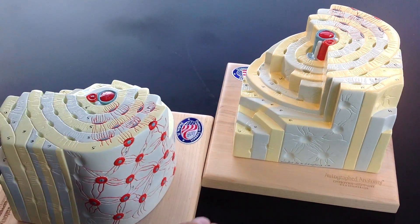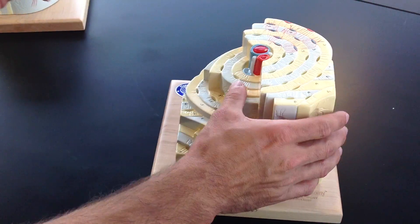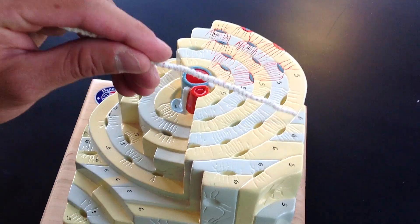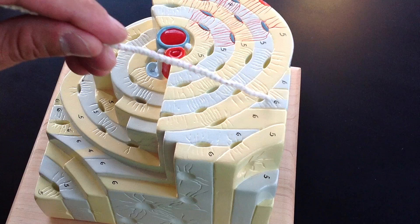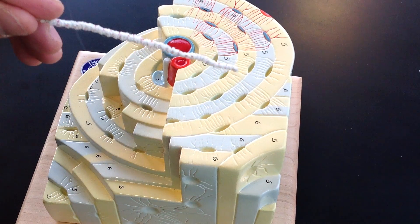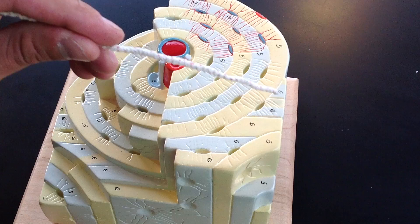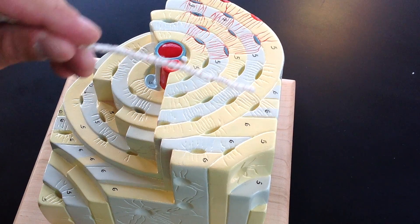And one more thing is that these perpendicular lamellae are called interstitial lamellae. And they go in between osteocytes.